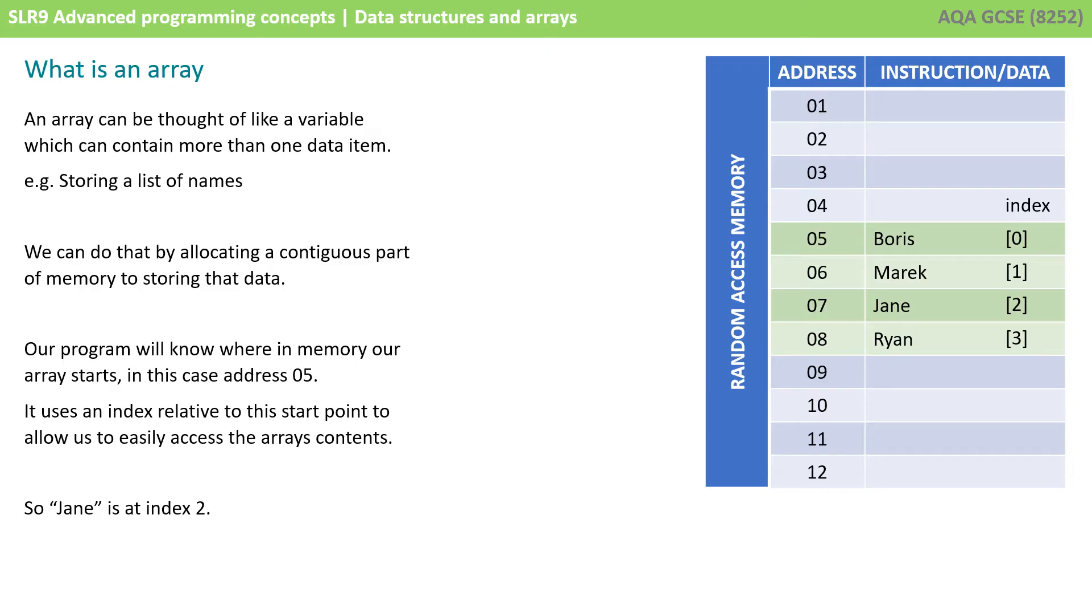So, our program will know where in memory our array starts, in this case address 5. And we can therefore use an index relative to the start point to allow us to easily access the array's contents. So, notice arrays are typically 0 indexed, which means Jane is at index 2, not index 3. It is in the third position in the array, but because we start at 0, it's at index 2.